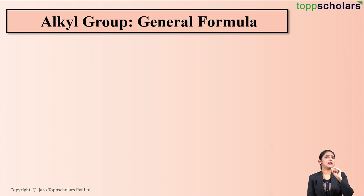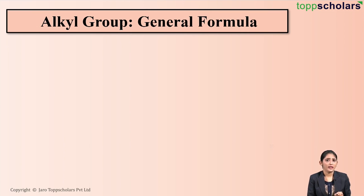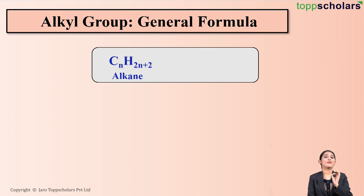But what is the general formula of an alkyl group? It's very simple. For this you need to know the general formula of alkane, and what is it? CnH2n+2 is the general formula of alkane.